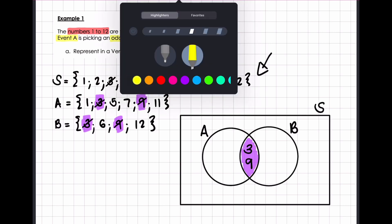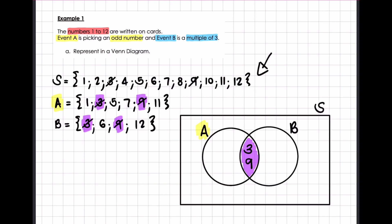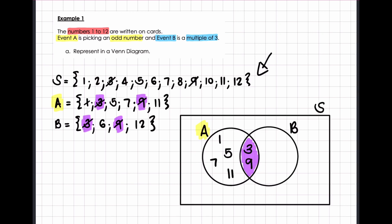So if we go to event A, we are left with values 1, 5, 7 and 11. So we place 1, 5, 7 and 11 within circle A. The 3 and the 9 are still there because they're in the overlap. I take 1, 5, 7 and 11 out of my sample space. Event B was a multiple of 3, so now I finish up event B's circle. Remember 3 and 9 are already there in the intersection, and now I have 6 and 12. So I put 6 and 12, and cross them out from my sample space.